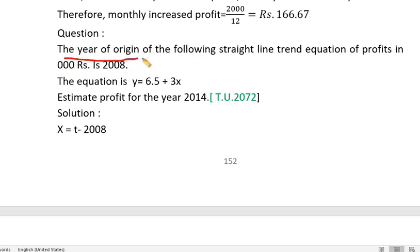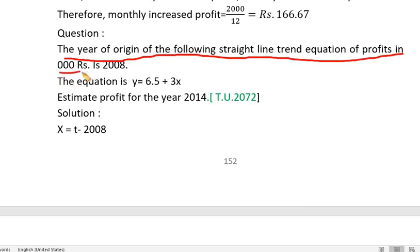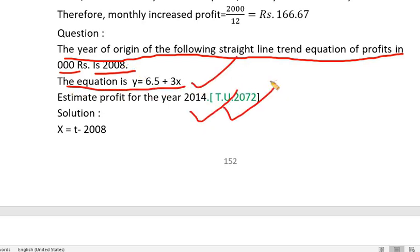The year of origin of the following straight-line trend equation — profit in thousands — is 2008. This is a repeat-type equation question.